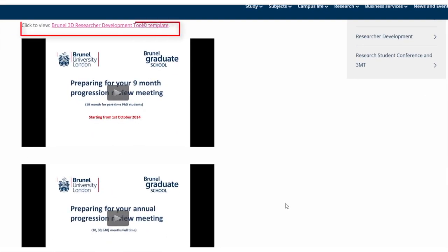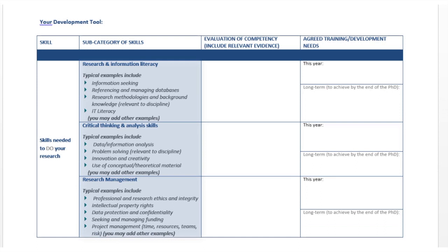As you can see on the form, in the first column you will see each skill category has subcategories and each one has some examples. These examples are not necessarily relevant to you; however, you can add as many of your own examples as you need for your own discipline and situation.